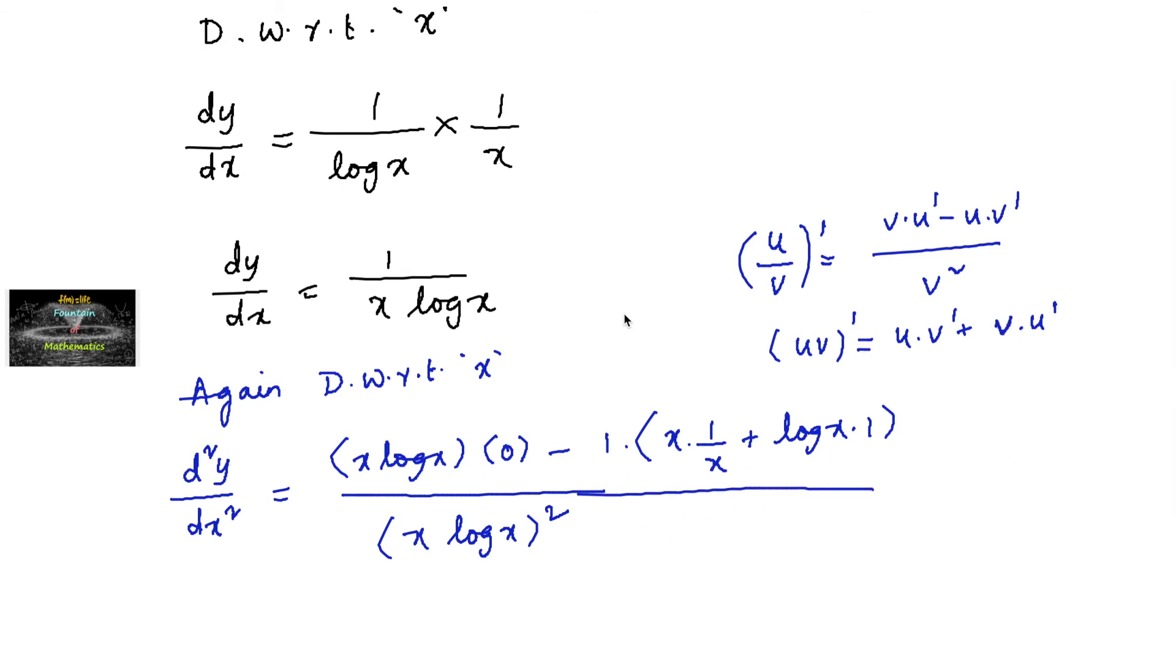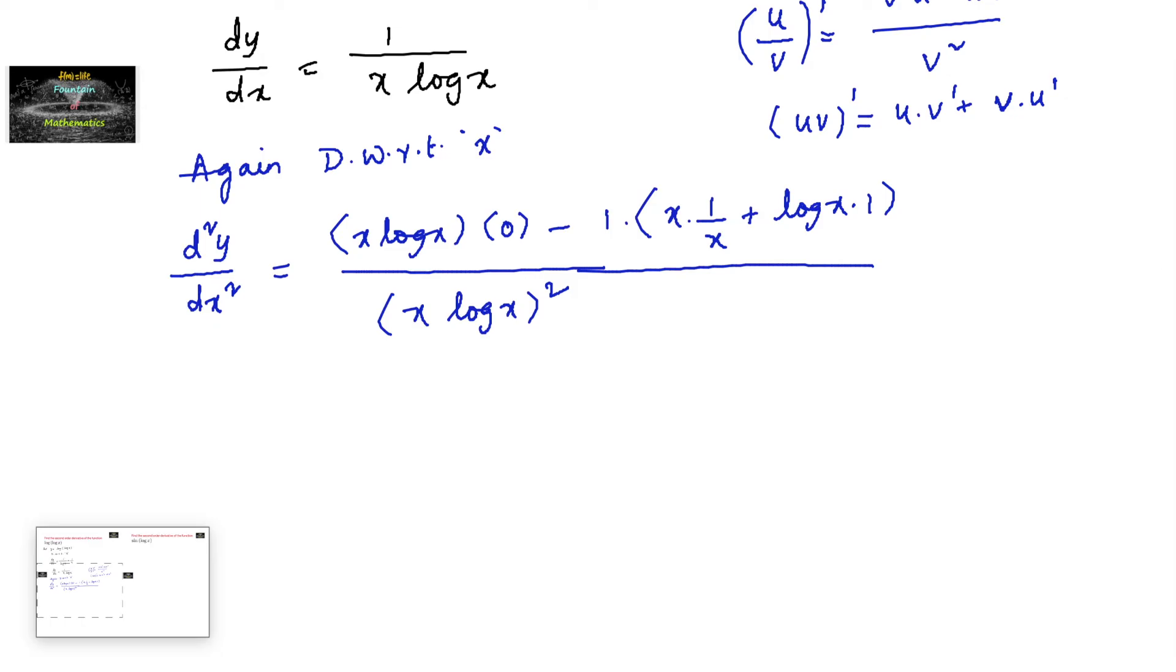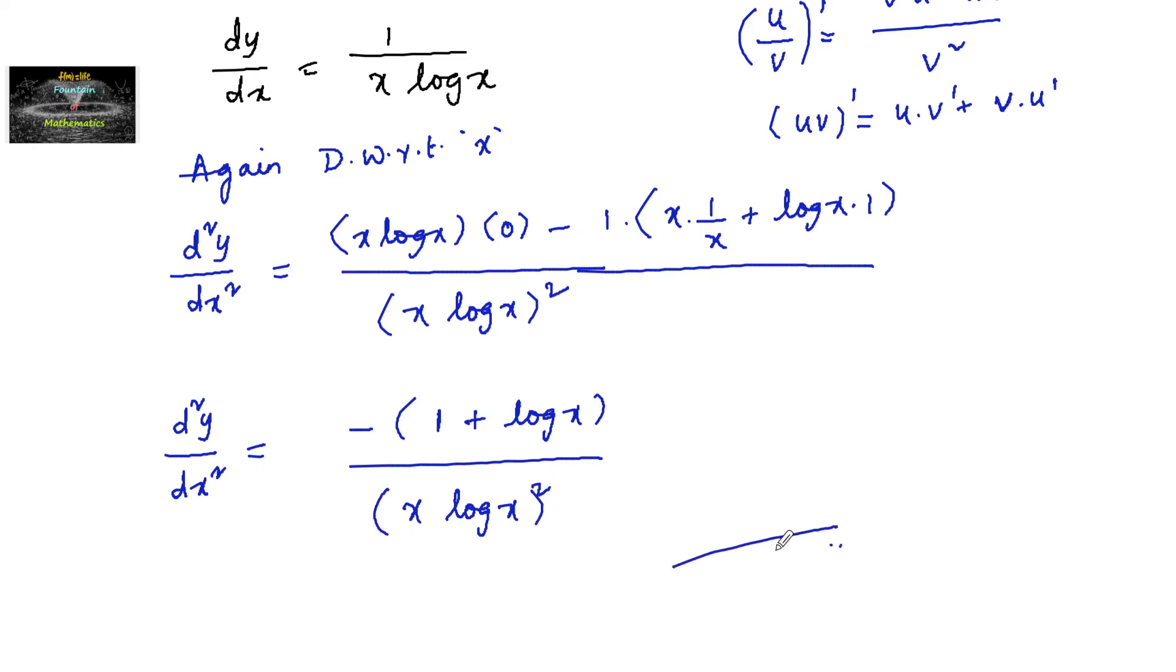So we can rewrite this as d²y/dx² equals 0 minus x times 1/x, which can be written as (1 + log x)/(x log x)². So the second order derivative of log(log x) is -(1 + log x)/(x log x)².